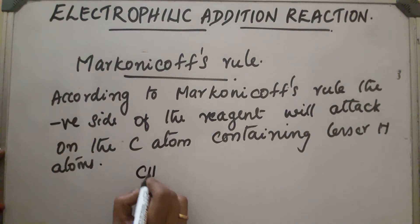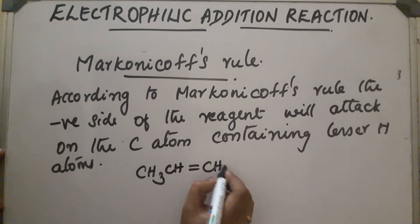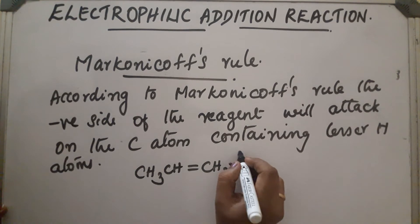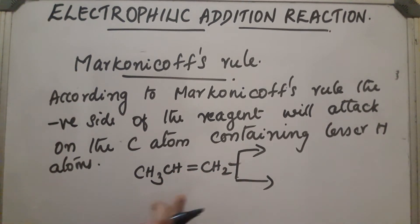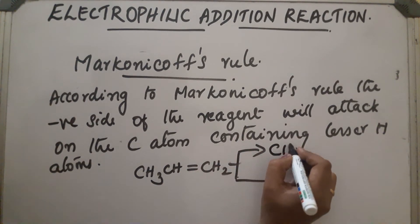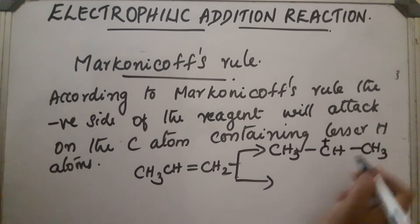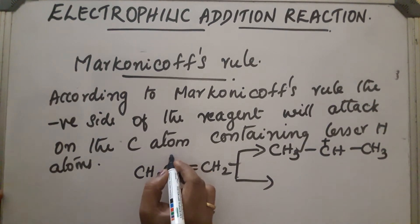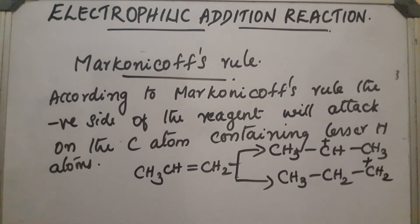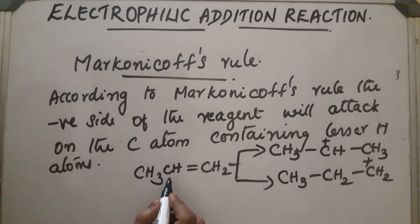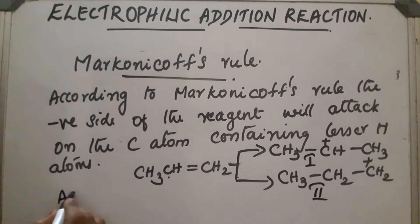In the case of the unsymmetrical alkene CH3-CH=CH2, two types of carbocations can be formed. If the electron moves one way, H+ attacks giving CH3-CH+-CH3, and if the bond shifts, CH2-CH2+ is formed. According to Markovnikov's rule, the first carbocation — CH3-CH+-CH3 — is more stable.